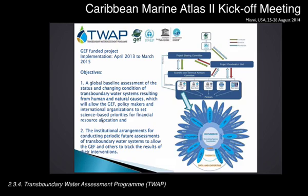The implementation phase is from April 2013 to March next year. The general objectives of the project are a global baseline assessment for the status and changing conditions of the Transboundary Waters systems resulting from human and natural causes, allowing GEF and policymakers and international organizations to set science-based priorities for financial resources allocation and institutional arrangements for periodic monitoring.